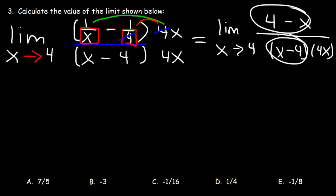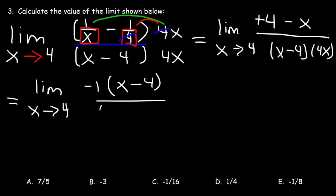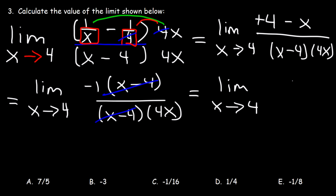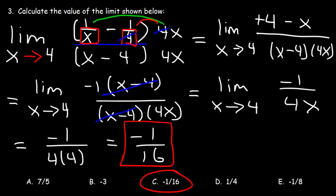Now these two factors look very similar, but they're not exactly the same. So what we're going to do is we're going to factor out a negative 1. If we do so, negative x will change into positive x, and positive 4 will change into negative 4. And it's at this point that we can get rid of the x minus 4. So now we have the limit as x approaches 4 of negative 1 divided by 4x. Now we can use direct substitution. So this is going to be negative 1 over 4 times 4, which gives us a final answer of negative 1 divided by 16, which means C is the right answer.